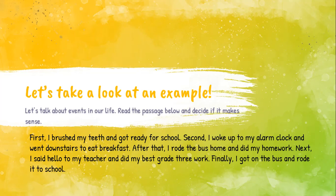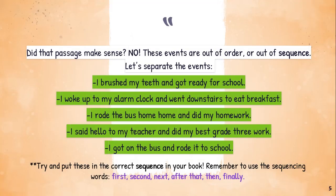Did all of the events make sense in the order that they were? First I brushed my teeth and got ready for school — but second, I woke up to my alarm clock? So I woke up after I brushed my teeth? That's a bit confusing. Then I rode the bus home and did my homework — but next I said hello to my teacher while I'm at home? Is my teacher at my house? Oh, but then finally, I got on the bus and rode it to school. The passage did not make sense because the events were out of order, or out of sequence.